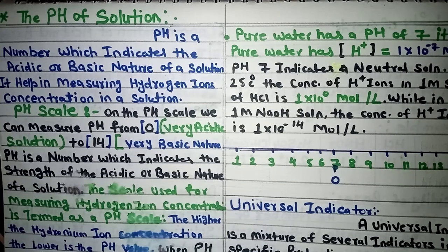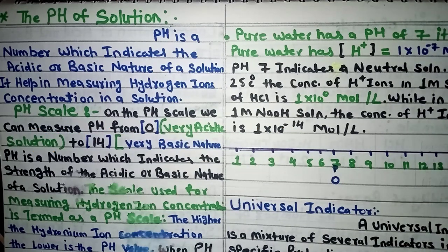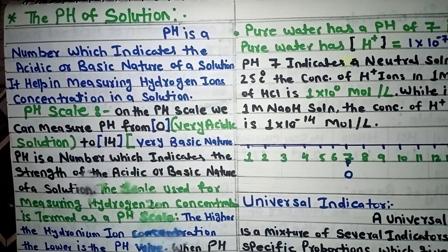Next topic is pH of solution. pH stands for 'power of hydrogen.' In the solution you have made, what is the power of hydrogen? If your compound is acidic, then the power of H+ ions is measured; if basic, then power of OH⁻ is considered. Definition: pH is a number which indicates the acidic or basic nature of a solution. It helps in measuring hydrogen ion concentration in a solution.